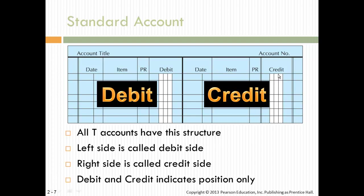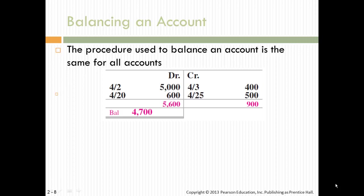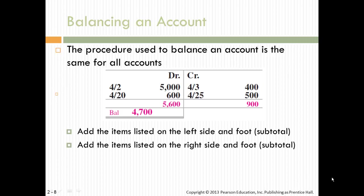Debits and credits indicate position only. The procedure used to balance an account is the same for all accounts, no matter if it's asset, liability, equity, expense, or revenue. You have your numbers, your dates, your amounts, and a balance with a double underscore. This is called a subtotal, also called a footing. You foot an account and then calculate a balance total. These are footings.